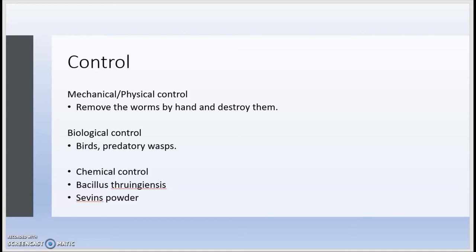Then you have biological control, which can be done through birds, predatory wasps, or in some cases chickens. You can find companies that breed predatory wasps that you can buy and put into your farm or garden, and they will primarily attack these worms. In cases of chickens and birds, they could also cause other damage that you may not want, so you have to be cautious. But biological control is a valid control method.